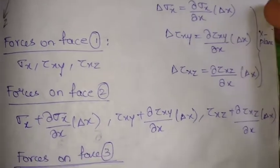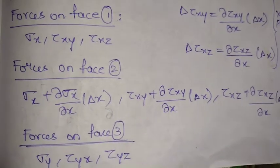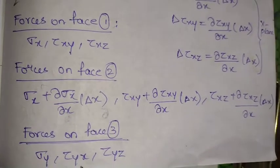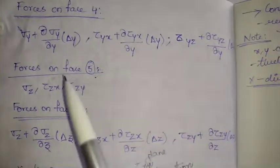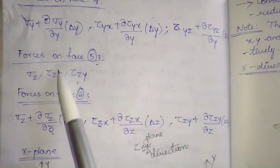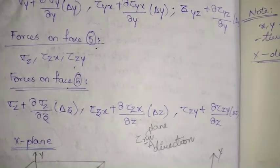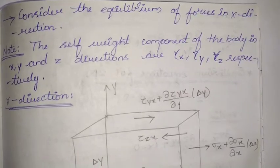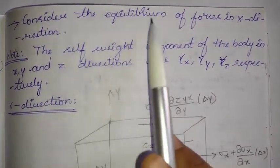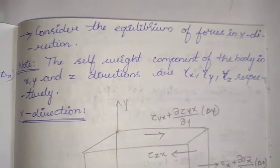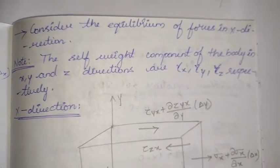We now note all the forces on each face. Forces on faces 1, 2, and 3 are listed, and similarly forces on faces 4, 5, and 6. With all forces identified on all faces, we can derive the equilibrium equations by considering force equilibrium in the x, y, and z directions.